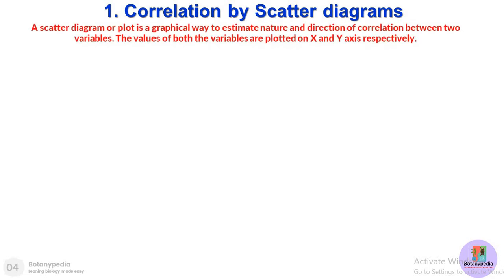Let's talk about the first method, the scatter diagram method. A scatter diagram is a graphical way to estimate the nature and direction of correlation. Direction means it can be a positive correlation or it can be a negative correlation. A scatter plot is a kind of graph that helps us estimate the nature and direction of correlation between two variables that we are testing for relationship.